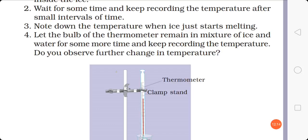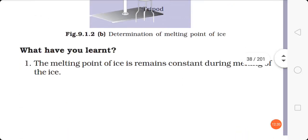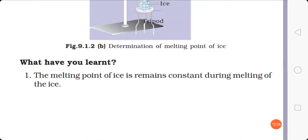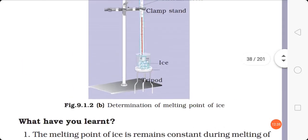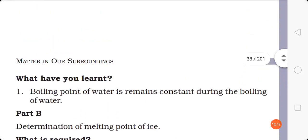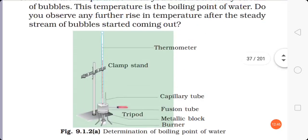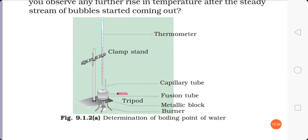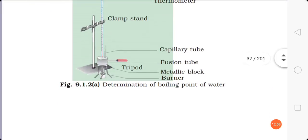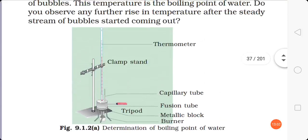Let the bulb of the thermometer remain in the mixture of ice and water for some more time and keep recording the temperature. Once ice starts melting, the temperature remains constant — the melting point of ice remains constant during melting. The conclusion from both activities: the boiling point of water is 100 degrees Celsius and the melting point of ice is 0 degrees Celsius. After ice starts melting or water starts boiling, that temperature remains constant.